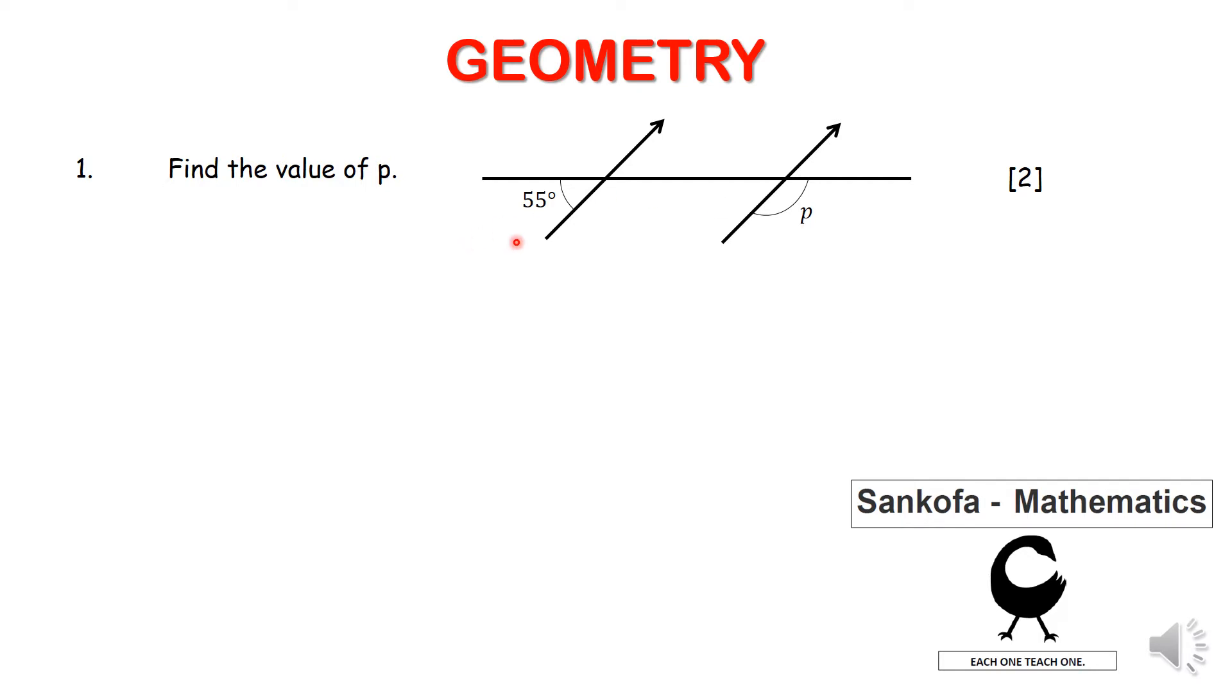So here we have a diagram and these two lines here, the arrows, indicate that these two lines are parallel. And I hope you still remember certain properties that are formed by parallel lines as well as a transversal that cuts through them.